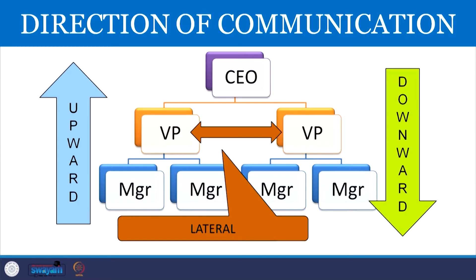Direction of communication refers to the flow of communication in an organization. There can be upward and downward flow. Downward communication flows from top to bottom — in the form of guidelines, directions, directives, and achievement of goals. Upward communication flows from bottom to top — such as feedback from the lower level of management to top management. Lateral communication occurs between peers or between departments at the same hierarchical level. So the three directions are upward, downward, and lateral communication.